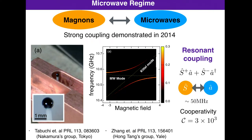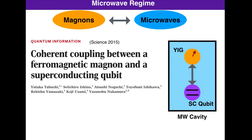In this experiment, they show they can strongly couple the magnetic excitations in this YIG sphere to the microwave field. Looking at the plot, as the external magnetic field is swept and the two modes enter resonance, there is a splitting — a hybridization of the modes — and this splitting gives us the magnitude of the coupling. It is a resonant coupling: a magnon goes into a photon, a photon goes into a magnon. It's around 50 MHz for this setup, giving a cooperativity of around 10³.